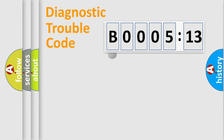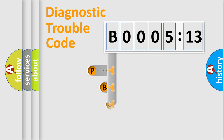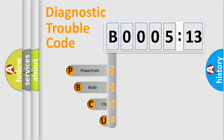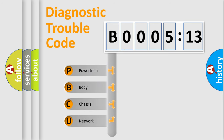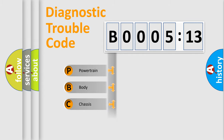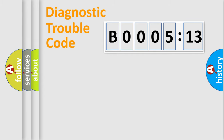First, let's look at the history of diagnostic fault code composition according to the OBD2 protocol, which is unified for all automakers since 2000. We divide the electric system of the automobile into four basic units: Powertrain, Body, Chassis, and Network.